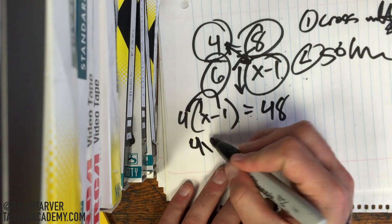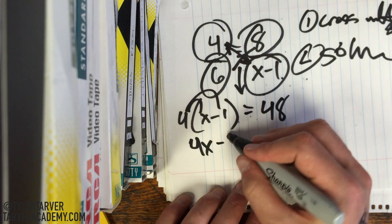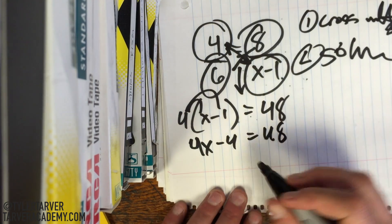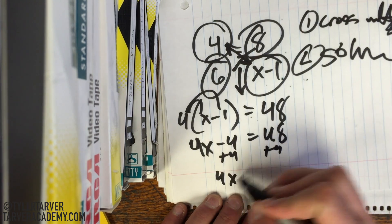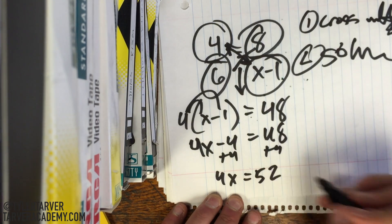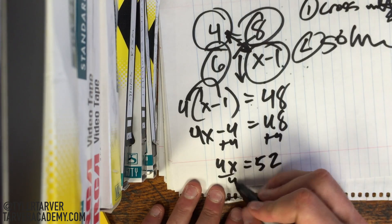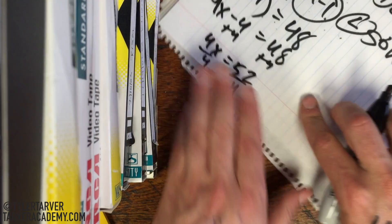Go in there, 4x, and then 4 times 1 is negative 4. Okay? Now I want to add 4 to both sides, because that's the opposite. So, 4x equals 52. And then we just divide by 4 on both sides, and our answer is...